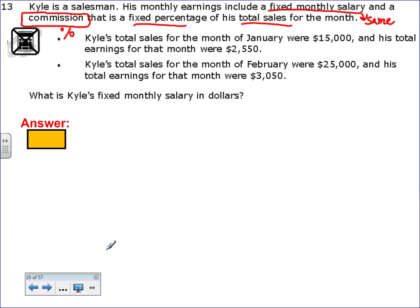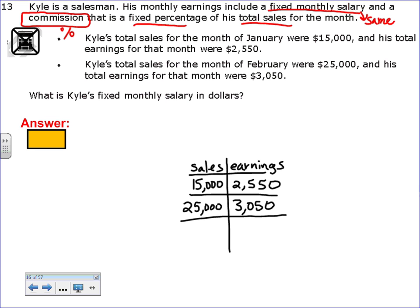His monthly earnings include a fixed monthly salary, that doesn't change, same every month. And then commission, when you're working at a store and someone helps you buy stuff, the person who helped you gets a percentage of how much stuff you buy. That's called commission. So I'm going to turn this into a table. In January, his sales were $15,000, which made him take home $2,550. The next month, he sold $25,000 and his paycheck to take home was $3,050.